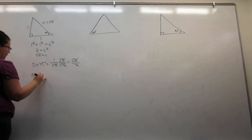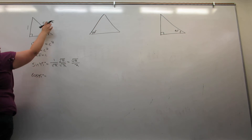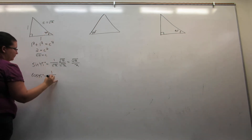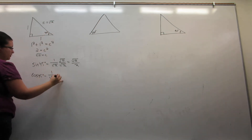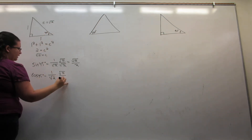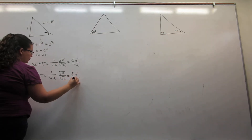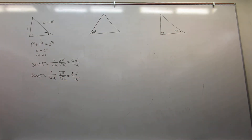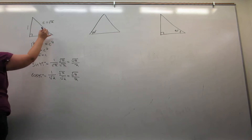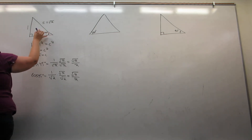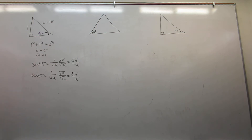The cosine of 45 degrees is adjacent over hypotenuse, 1 over root 2. Once again I rationalize the denominator and I get that the cosine of 45 degrees is also the square root of 2 over 2. And just so we don't forget what the radian measure is, 45 degrees is also the radian measure pi over 4.